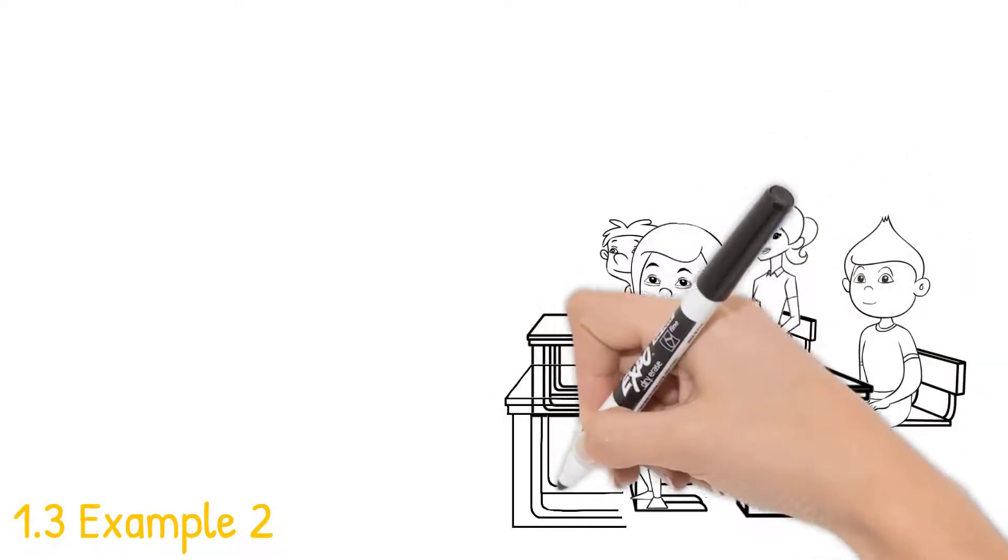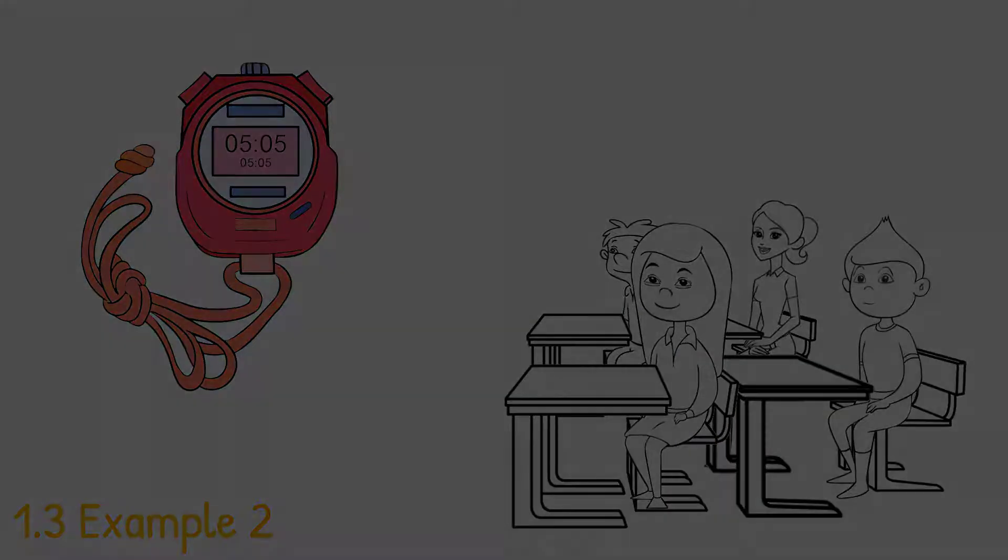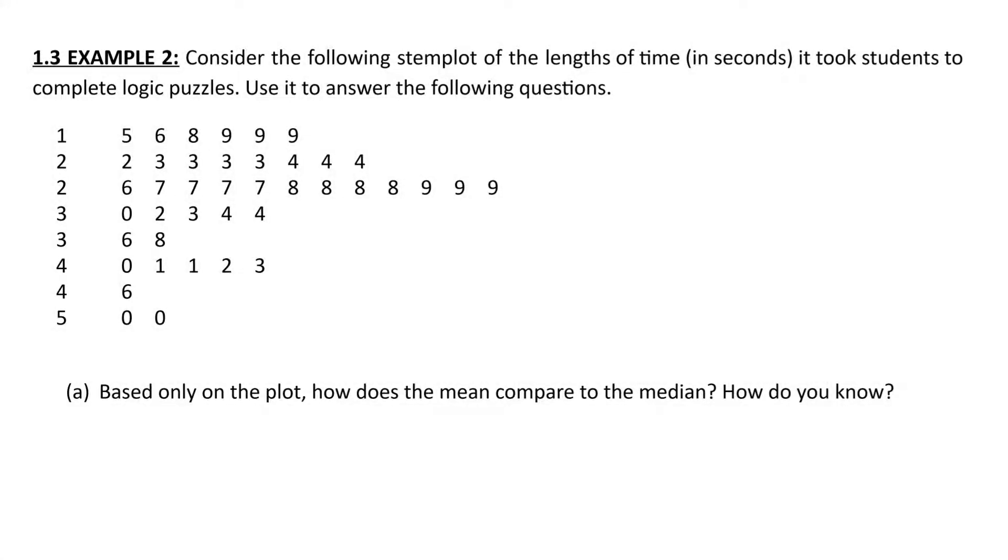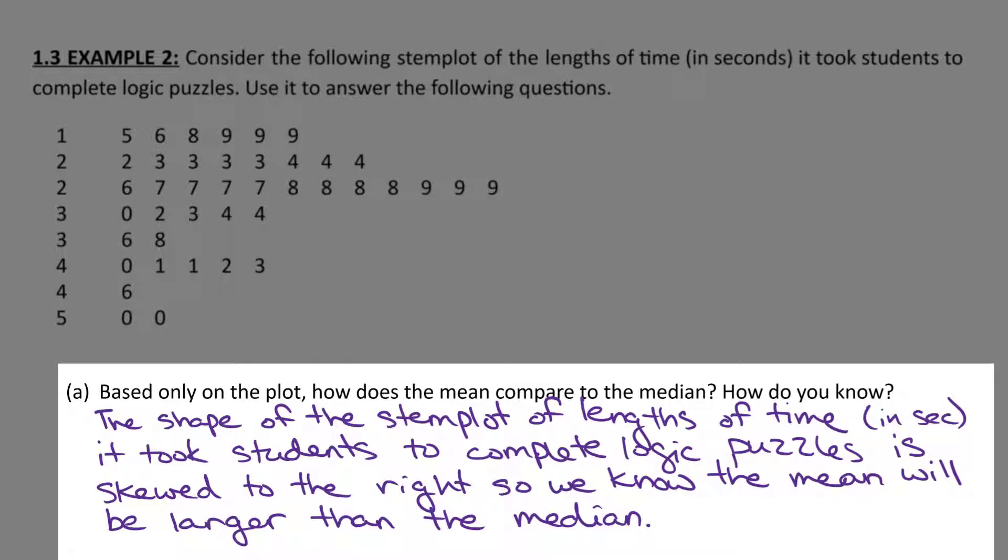So let's take a look at example 2. Consider the following stem plot of the lengths of time in seconds it took students to complete logic puzzles. Part A. Based only on the plot, how does the mean compare to the median? How do you know? We should say the shape of the stem plot of lengths of time in seconds it took students to complete logic puzzles is skewed to the right. So we know the mean will be larger than the median.